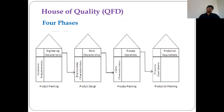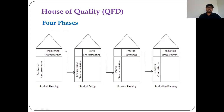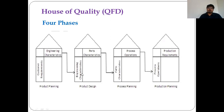There are four phases of the House of Quality. Phase one is product planning, using customer requirements and engineering characteristics. Phase two is product design, linking engineering characteristics to part characteristics. Phase three is process planning, looking at part characteristics and process operations. Phase four is production planning, connecting process operations to production requirements. At each phase you can do benchmarking across available practices to determine the best path forward.